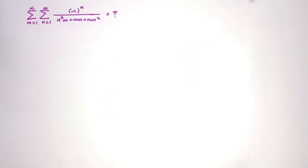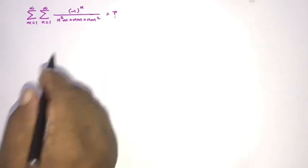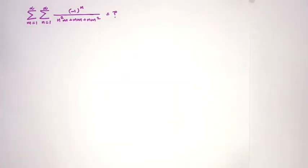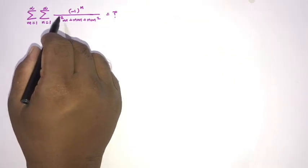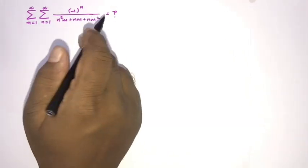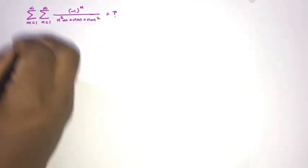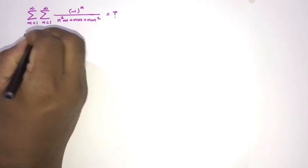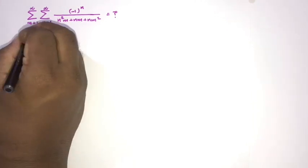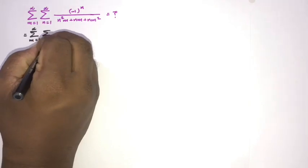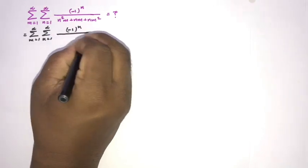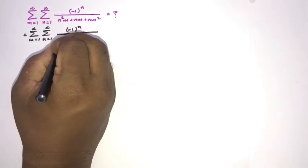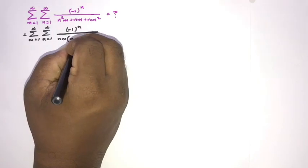Welcome to the mathematics channel. Here we have an interesting double sum. In the denominator we have n² + nm + nm², so nm is a common factor. We can write the sum with m from 1 to infinity and n from 1 to infinity of (-1)^n over nm(n + m + 1).